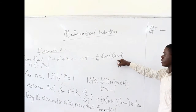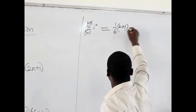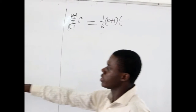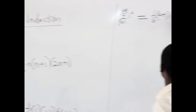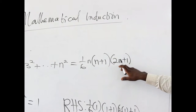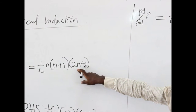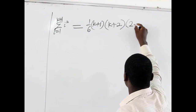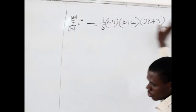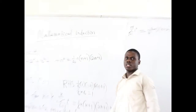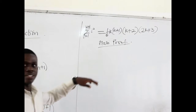Any place you see n, we write k+1. So that will be equal to (1/6) · (k+1) · (k+2) · (2k+3). We are proving that this is equal to this using the assumption. All we need to do is see if we can write the left side to equal the right side. Let's look at the main proof.